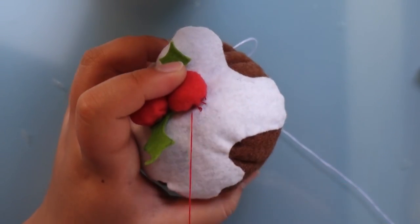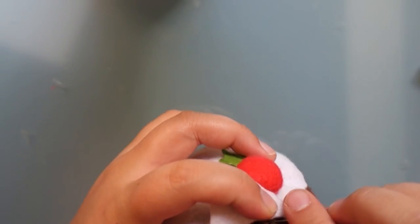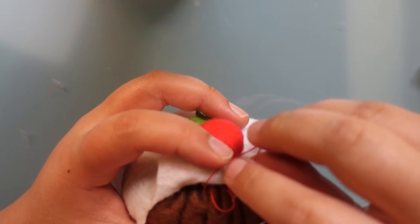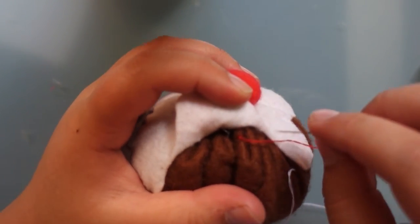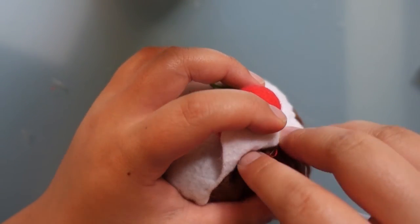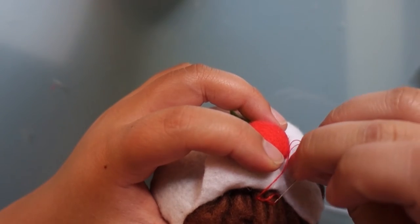Now you just do exactly the same thing with the second berry and leaf. And this time when you want to secure the thread, you need to do a hook and loop knot method and do this twice to make sure everything's really secure.